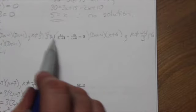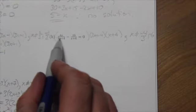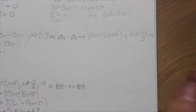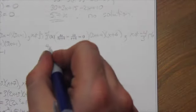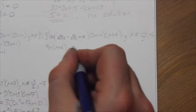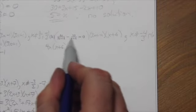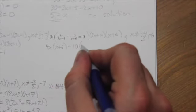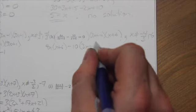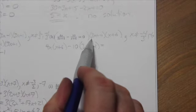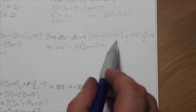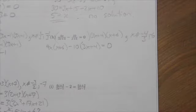When you multiply this through by every term, if you multiply by the first term — 4x divided by 3x plus 4 — the 3x plus 4 terms cancel. So you're left with 4x times x plus 6. Then for 10 divided by x plus 6, the x plus 6 terms cancel, leaving 10 times 3x plus 4 equals 0, since the right side is just 3x plus 4 times x plus 6 times 0.